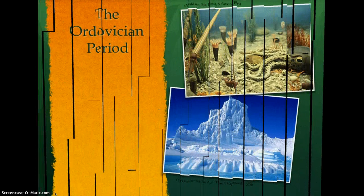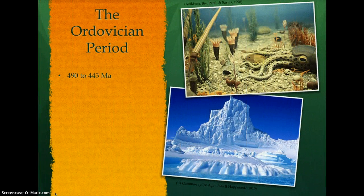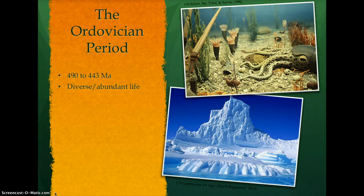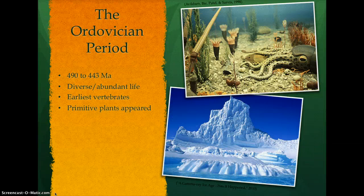The Ordovician period, starting around 490 million years ago, was a time of great diversity and abundant marine life. The earliest vertebrates, such as the jawless hagfish, appeared during the Ordovician period. Evidence of the first primitive plants began to appear on what was previously a barren land.